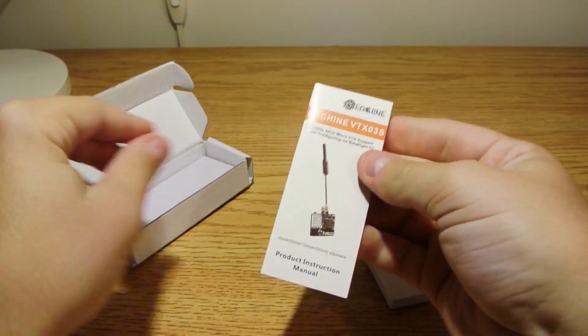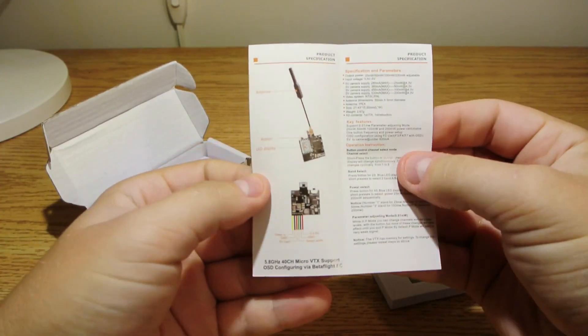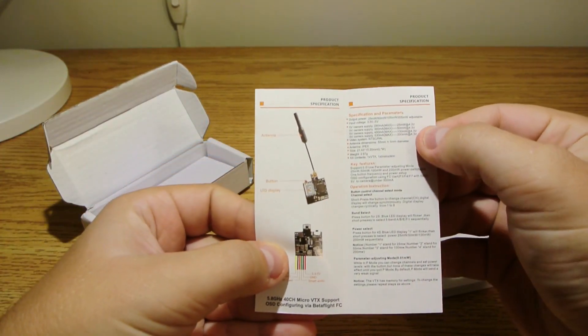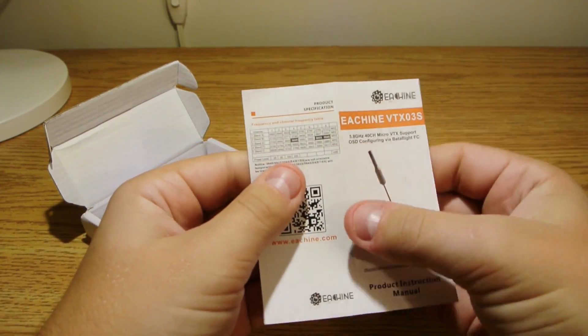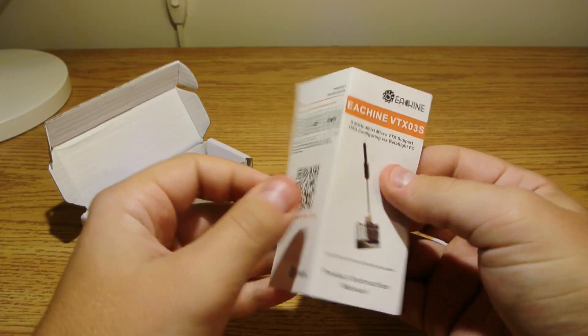The instruction sheet shows the wiring configuration, lists the current consumption at the various output levels, shows how to operate the transmitter via the buttons, and lists the available channels.